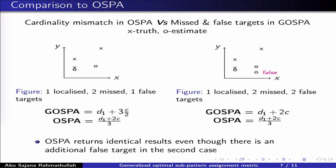So why does OSPA give this result? The bottom line is that a pair of missed and false targets gives a localization error c, whereas a single missed or false target yields a cardinality error c. In other words, counterintuitively, a pair of missed and false targets costs the same as a single missed or false target. With the previous example and this example, we've tried to illustrate why we believe GASPA is a more reasonable metric than OSPA for multi-target tracking.